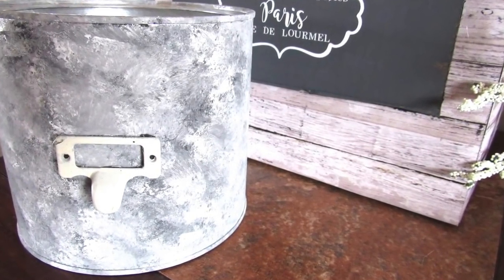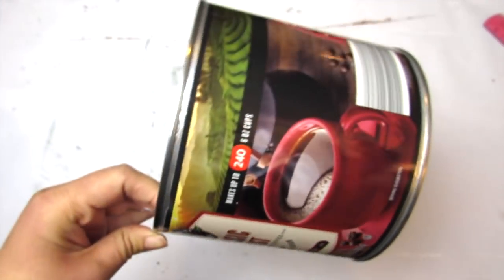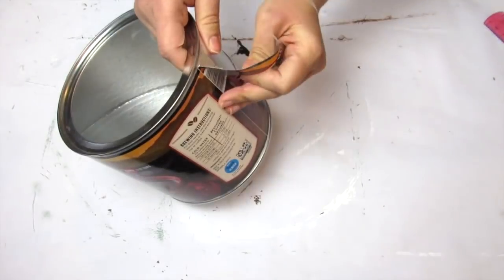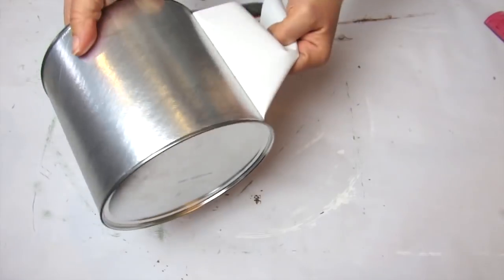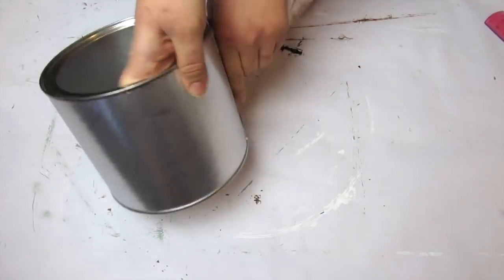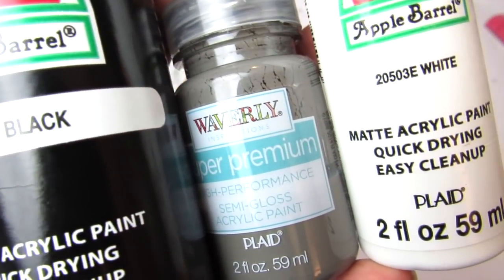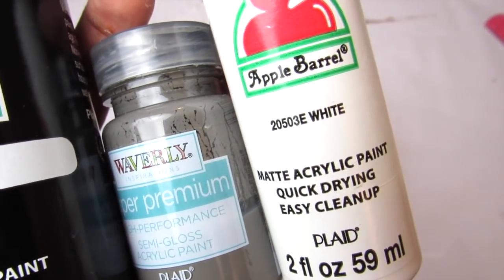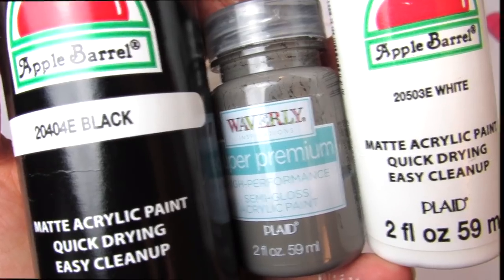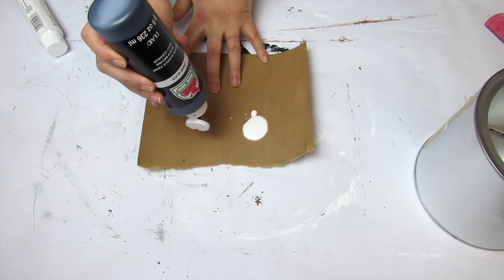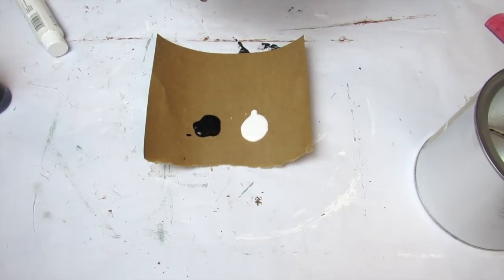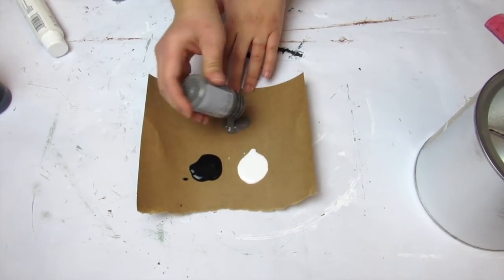Trash to treasure number three is going to be a galvanized tin. Taking this coffee tin—this is an Aldi one—I just ripped off the label on it. Since it already had a shiny metallic base, that's why I decided to do a faux galvanized look. I'm taking a black acrylic paint, Elephant Gray, and a white acrylic paint. The black and white are from Apple Barrel, the Elephant Gray is Waverly's acrylic. I am going to apply these and layer them with a sponge.